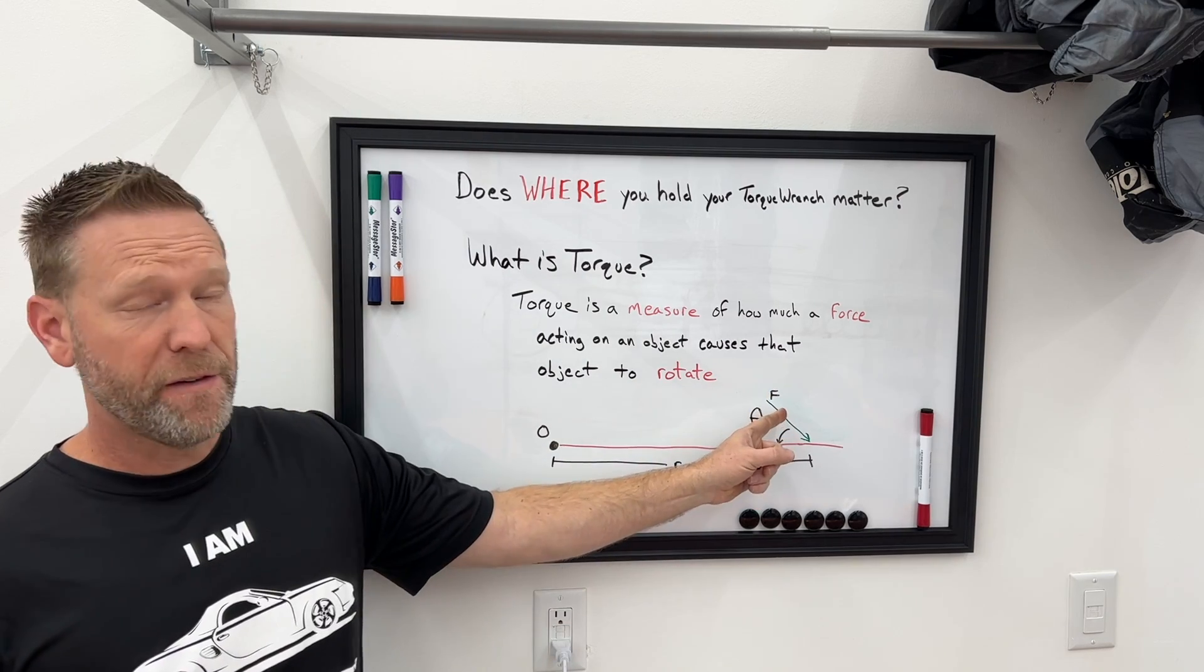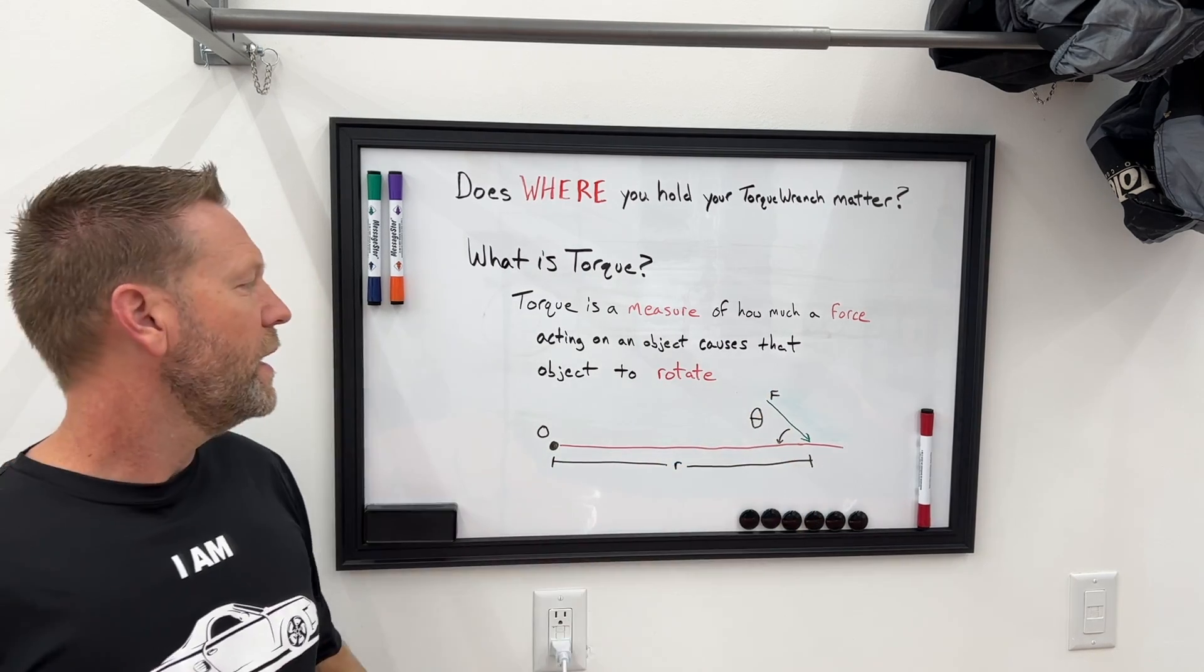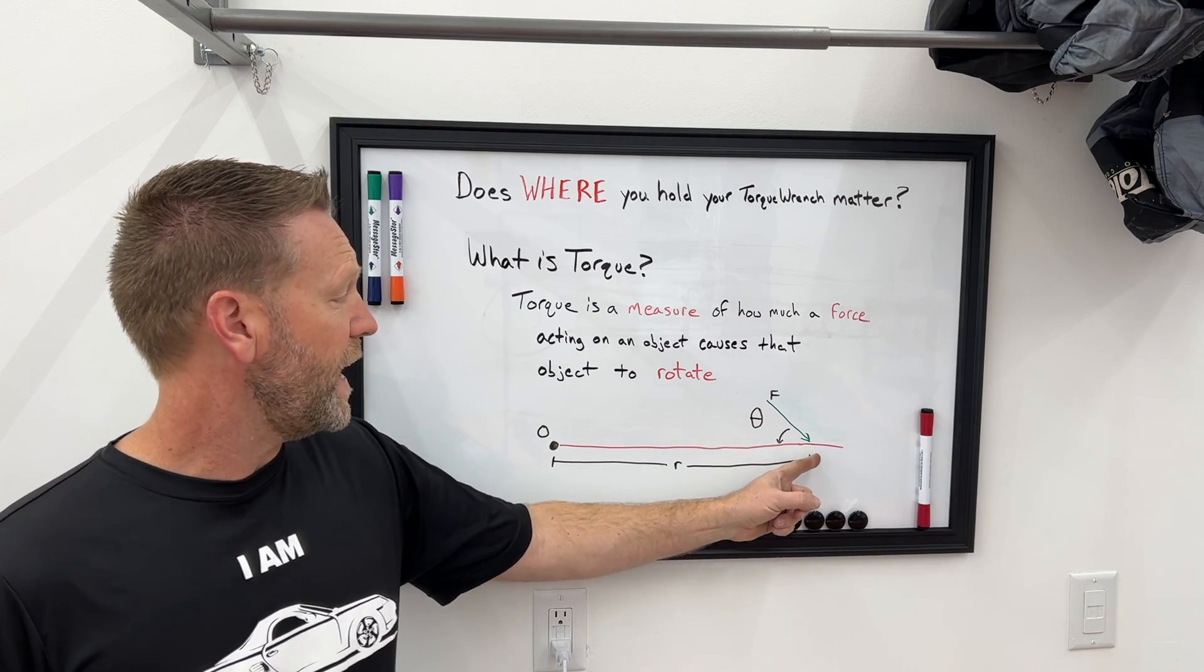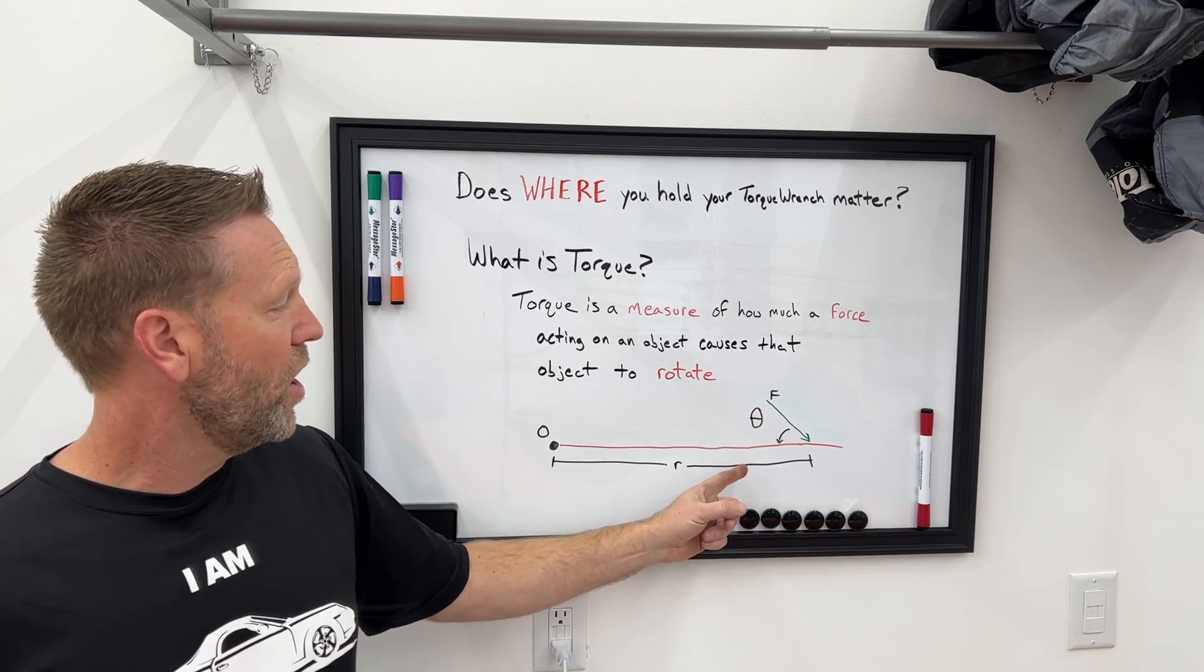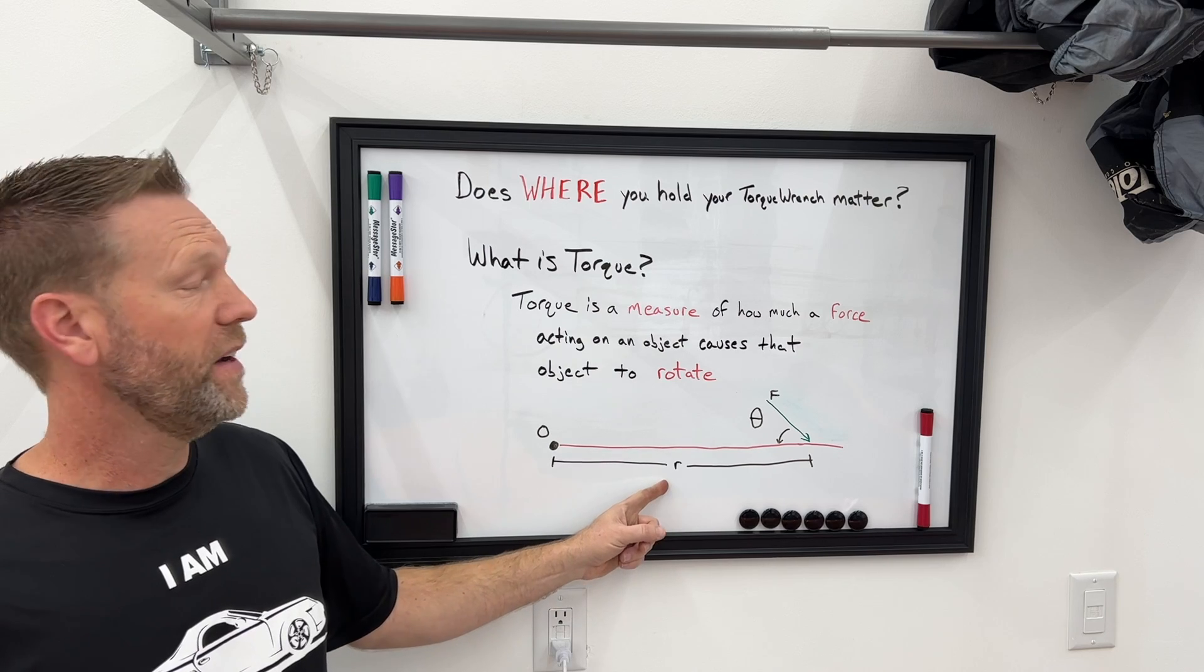We're going to call the force F, which is the green line. And the distance from the pivot point to where the force acts is called the moment arm, but we're going to call that R here in this diagram.